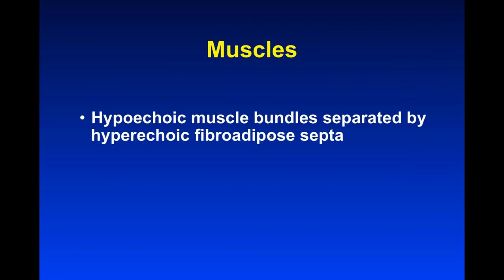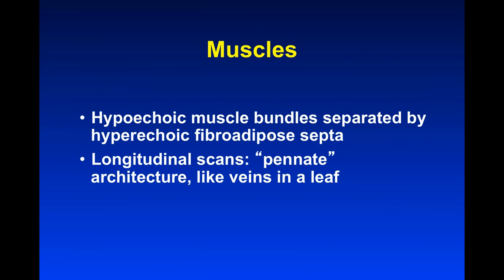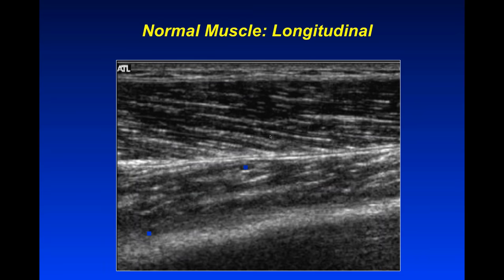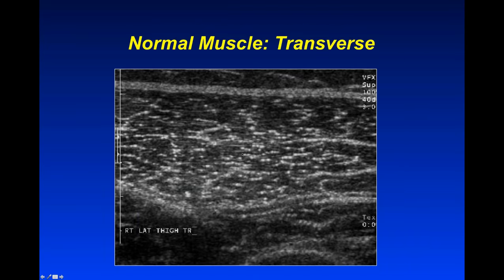Moving to muscles. Muscles look as hypoechoic muscle bundles separated by hyperechoic fibroadipose septa. On longitudinal scans they have a pennate architecture — they look like veins in a leaf. On transverse scans it's been said that muscles have a starry night pattern. Here is a normal vastus lateralis muscle in the thigh showing the hypoechoic muscle bundles separated by hyperechoic fibroadipose septa. Turning the probe perpendicularly shows the starry night pattern — the dark sky being the muscle fibers, the stars being the septa cut in cross-section.